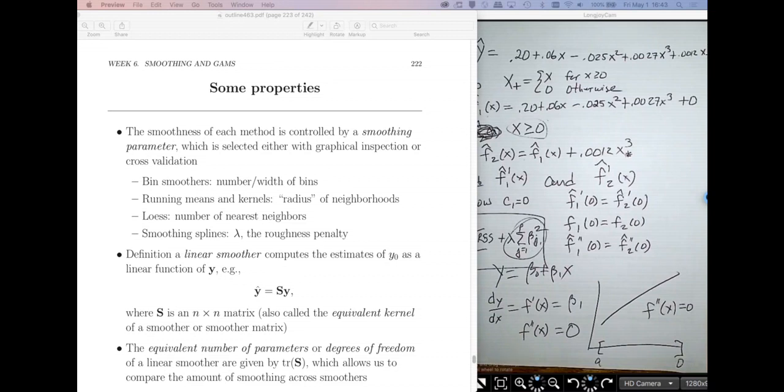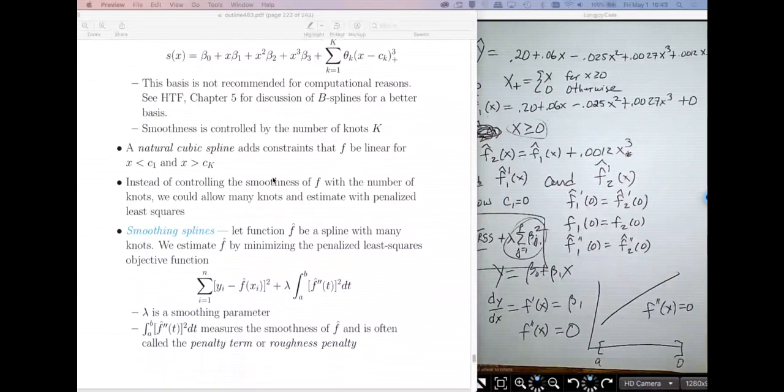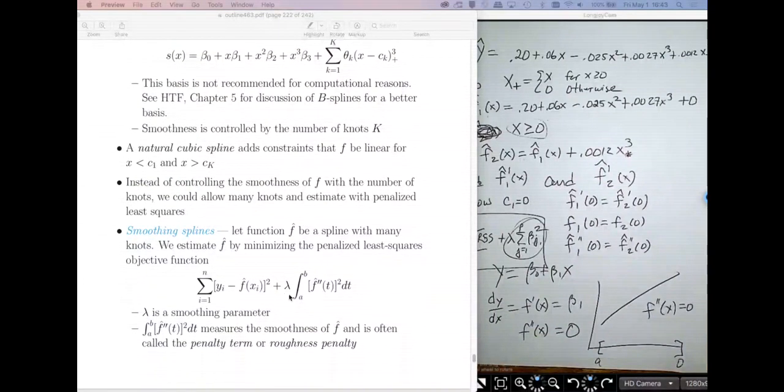So what I've told you so far is that we're going to have a smoothing spline which comes from a penalized least squares problem, where I control how flexible my function is through this penalty term, lambda.